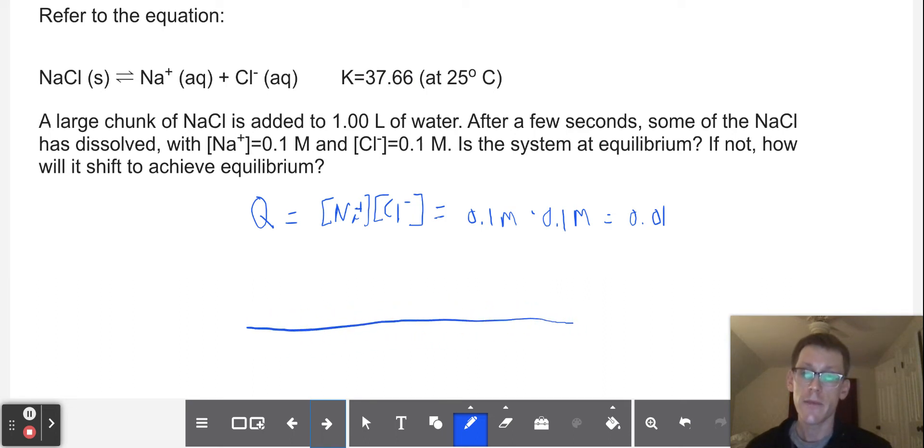You want to look at it like if we were to have, say, 0.00001, for example. This is a really low value of K. And then over here, we're going to have, like, 100,000. So this means lots of products, right? Lots of products. And on this side, we have lots of reactants.